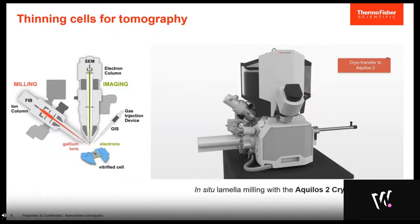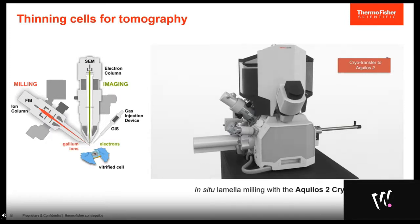This slide shows our Aquilos II CryoFIB system — a dedicated device for preparing samples for electron tomography. It is a dual-beam instrument, meaning there are two columns on this system: one electron column for scanning electron microscopy, and one focused ion beam column. The FIB column produces a very fine, focused beam of gallium ions that can be used to ablate material from a cellular sample. The next animation will show how this works.